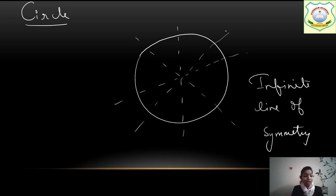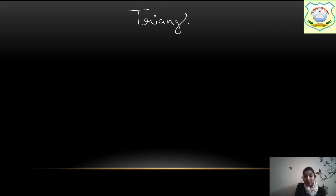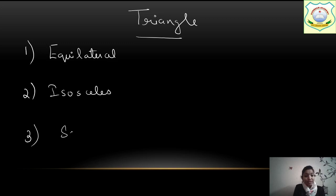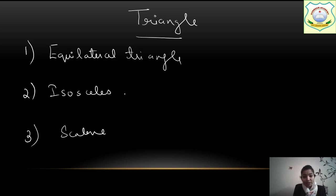This is your circle. Now it's time to understand about triangles. There are 3 types of triangles: first is equilateral triangle, second is isosceles triangle, and third is scalene triangle. So you need to understand all these 3 kinds of triangles and draw them.